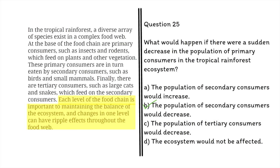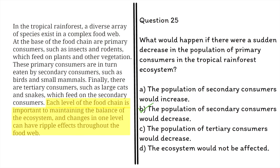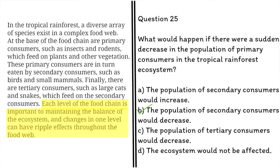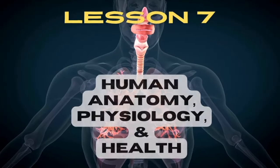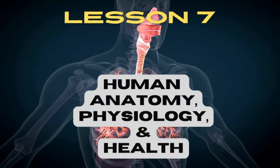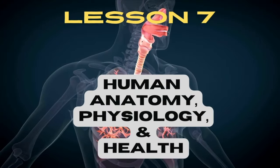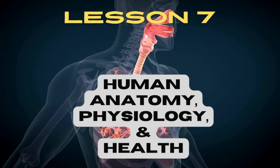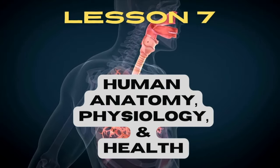Choice C is also correct if you look at the ripple effects, but B is a better choice in this question. Lesson 7: Human Anatomy, Physiology, and Health.